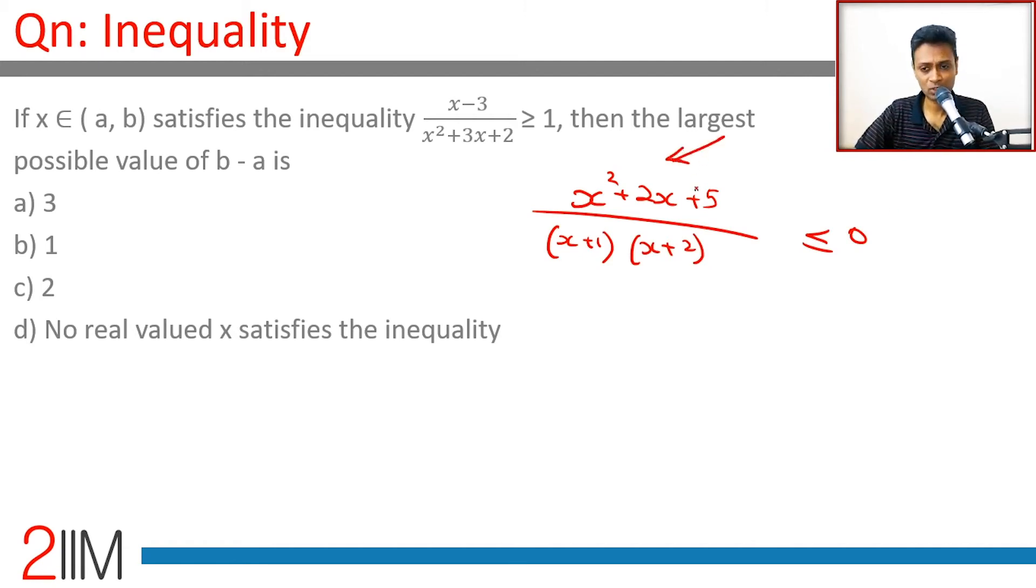This unfortunately doesn't get factorized beautifully. However, if you look at that expression, the numerator alone is x² + 2x + 1 + 4. This is (x + 1)² + 4, so this expression is (x + 1)² + 4.